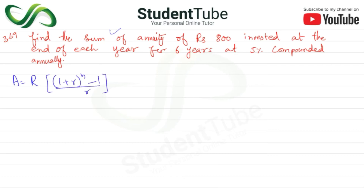Here, r = i / m, where i = 0.05 and m = 1 (compounded annually), so r = 0.05.